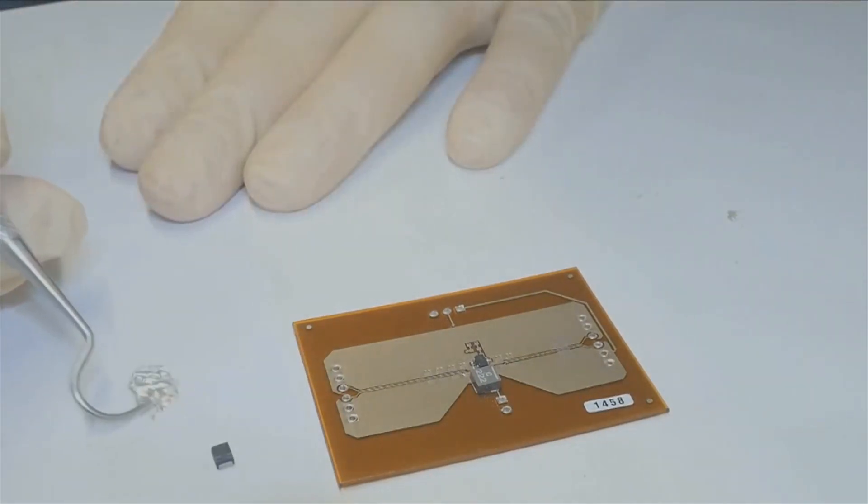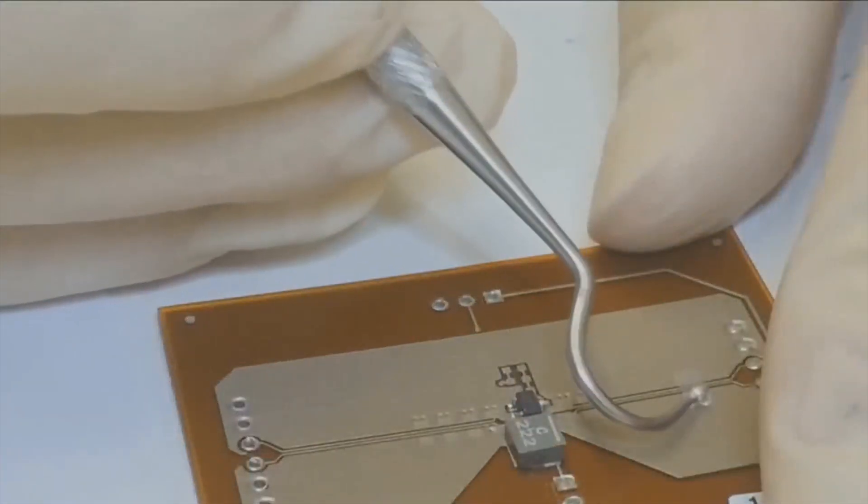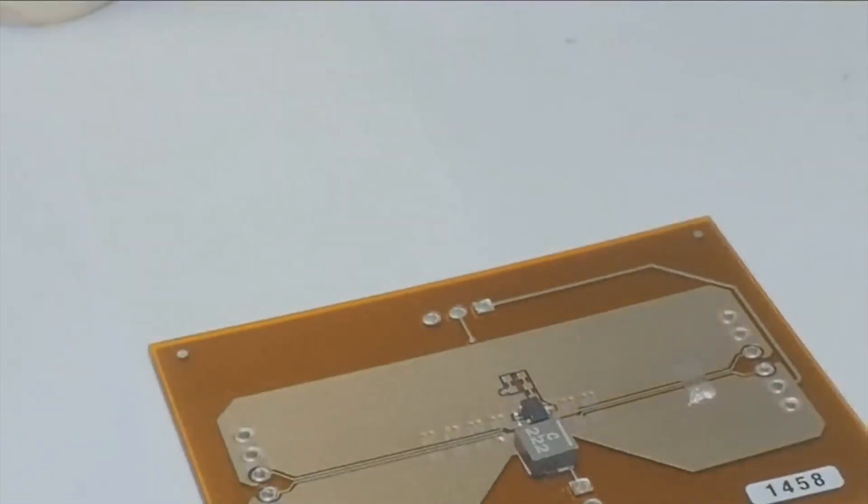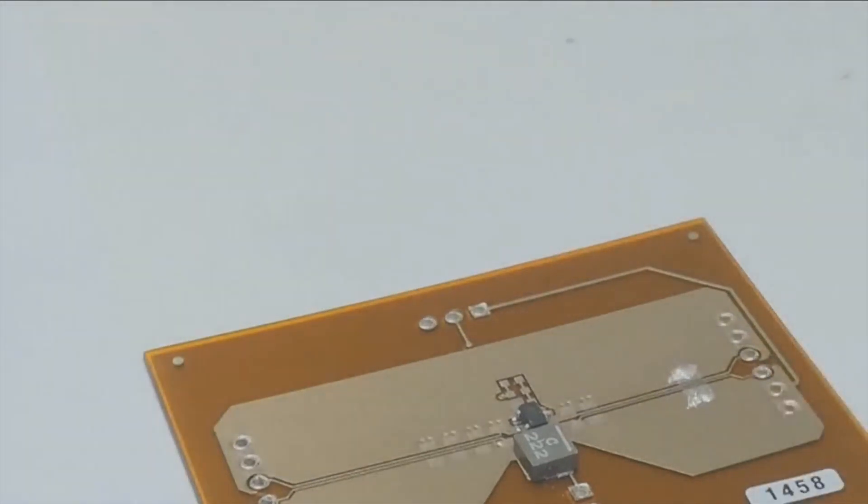When you begin, make sure the PCB is clean and free of contaminants. To clean the PCB, use isopropyl alcohol, keep a clean cloth and all necessary tools in the work area. Before applying the epoxy, make sure the component fits the pad and will be installed with the correct polarity.